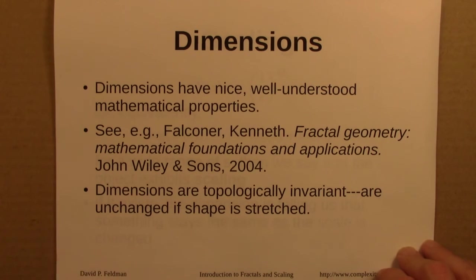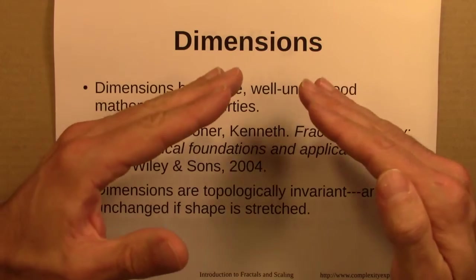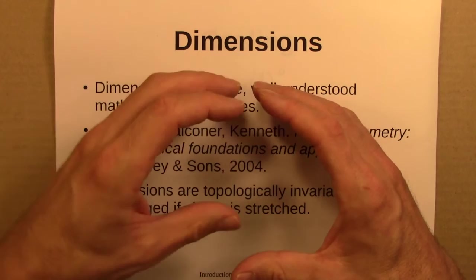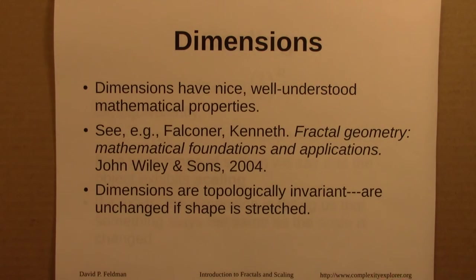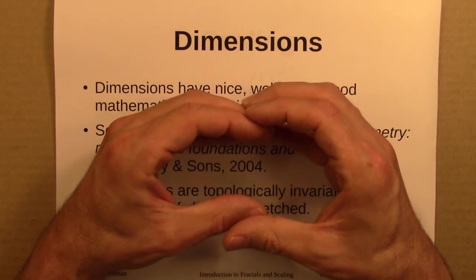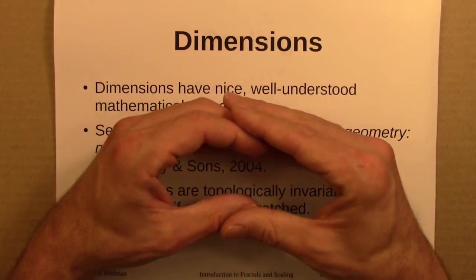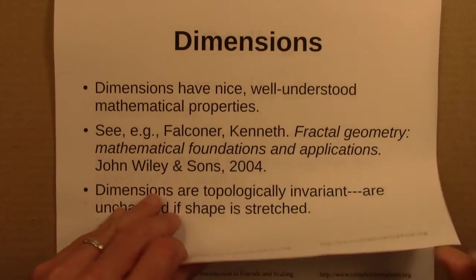One thing I'll mention though, is that dimensions are topologically invariant. And that's a nice property. That means if I have a shape and I stretch it a little bit, I can't cut it or rip it, but if I have a shape and I just stretch it a little bit in this direction, compress a little bit in that direction, that doesn't change the dimension. And that makes sense because if I have a circle that's two dimensional and I squash it into an oval, it's a different shape, but the dimension doesn't change. So smooth transformations don't change the dimension. So that's a nice mathematical property.